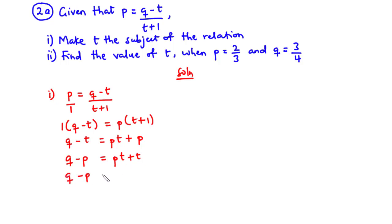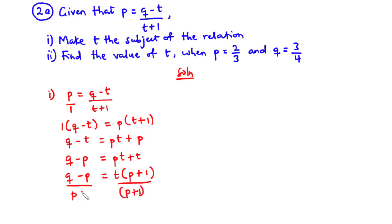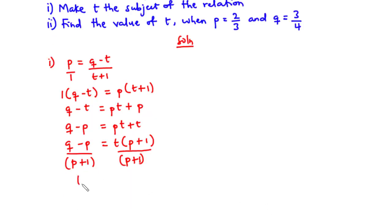Now we are going to factor out t. So this becomes t into bracket p plus 1. Because we want to make t the subject of the relation, we are going to divide through by p plus 1. And then we have t equal to k minus p over p plus 1. So we've been able to make t the subject of the relation.